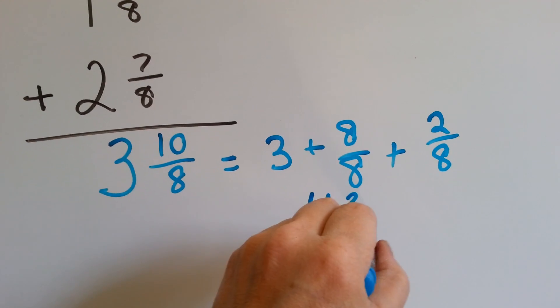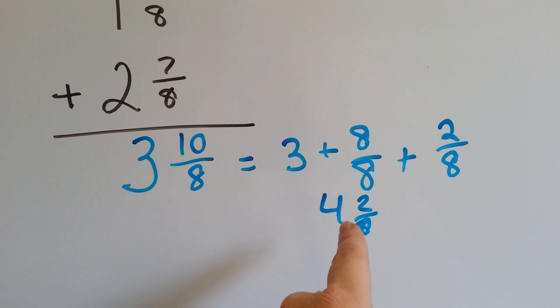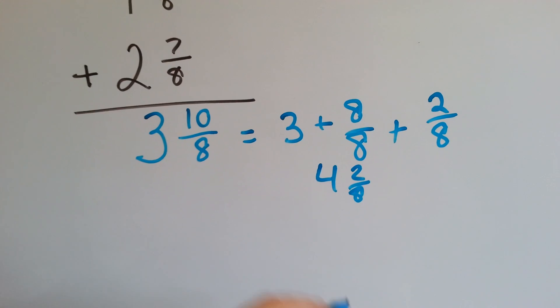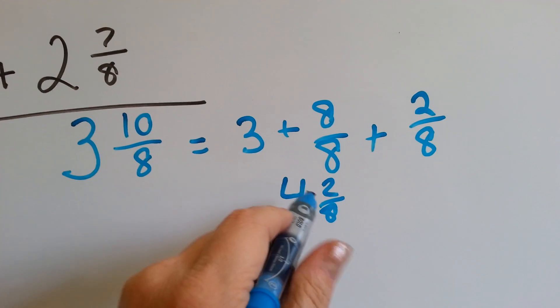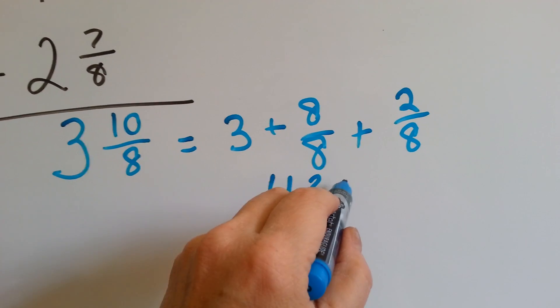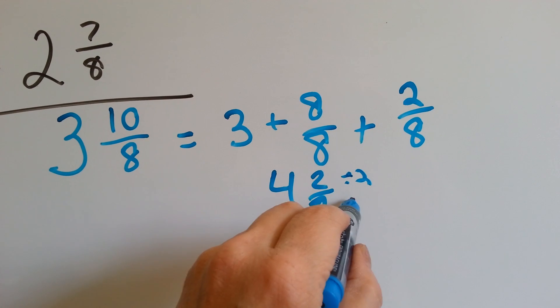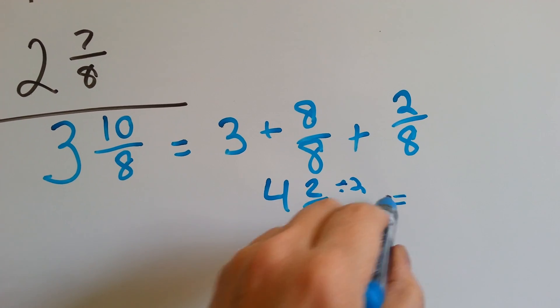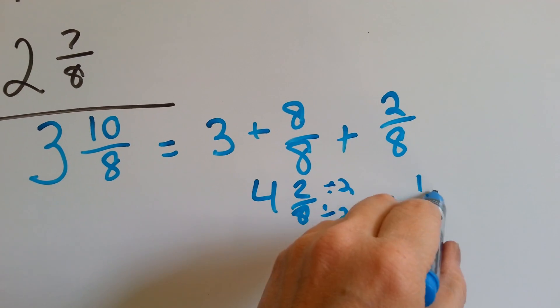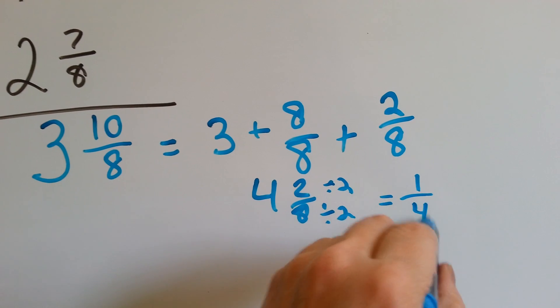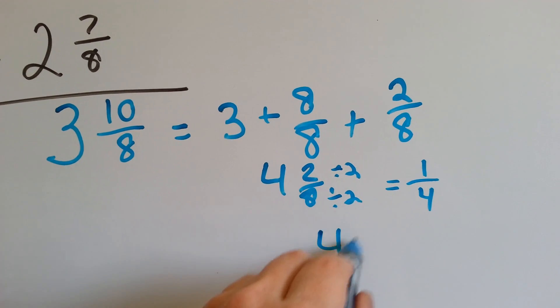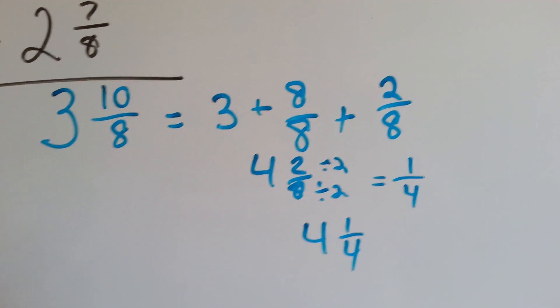And this actually can be simplified more. If we divide the 2 and the 8 by 2, 2 divided by 2 is 1, 8 divided by 2 is 4. We would get 4 and 1/4. Did you catch how I did that?